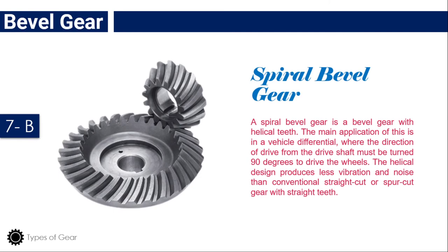Spiral bevel gear: A spiral bevel gear is a bevel gear with helical teeth. The main application of this is in a vehicle differential, where the direction of drive from the drive shaft must be turned 90 degrees to drive the wheels. The helical design produces less vibration and noise than conventional straight-cut or spur-cut gears with straight teeth.